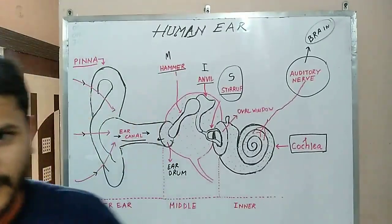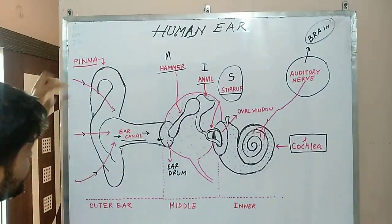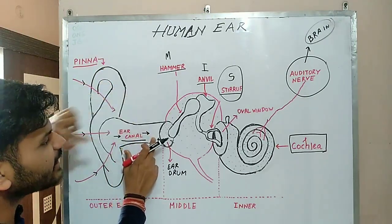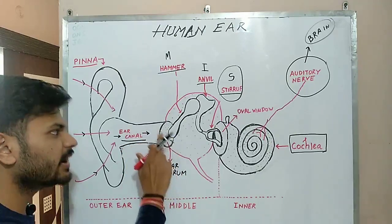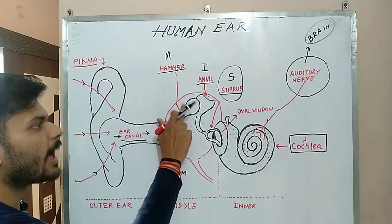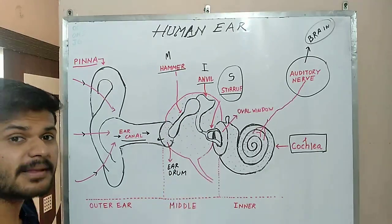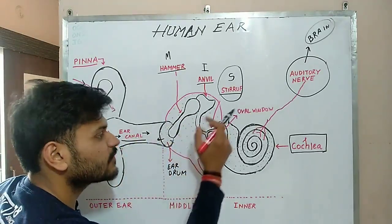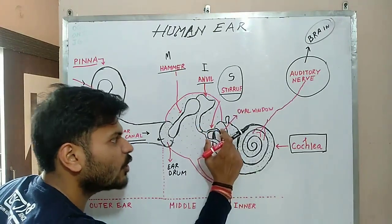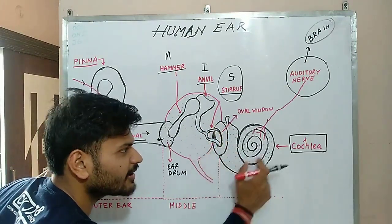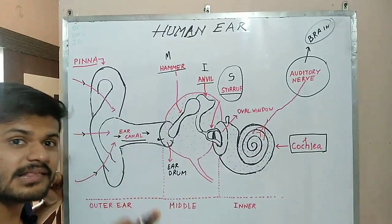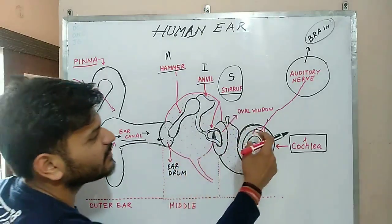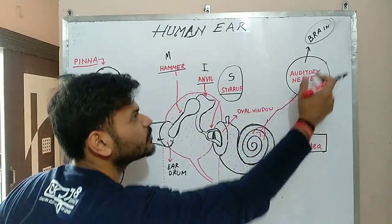To summarize: the outer ear collects sound and transfers it to the ear canal; the ear canal causes the eardrum to vibrate; the three bones — hammer, incus, and stapes — amplify the vibrations; these are passed through the oval window to the cochlea; and the cochlea's nerve cells convert vibrations into electrical impulses, which travel via the auditory nerve to the brain.